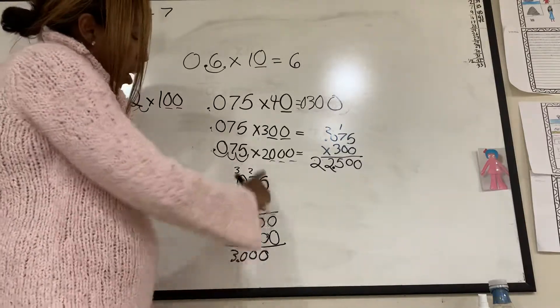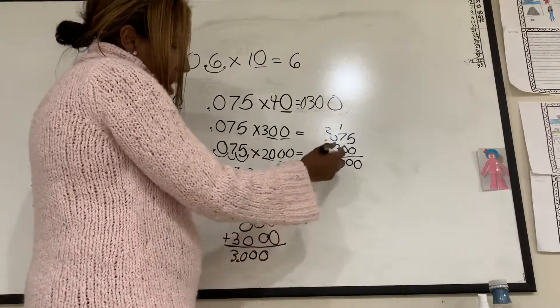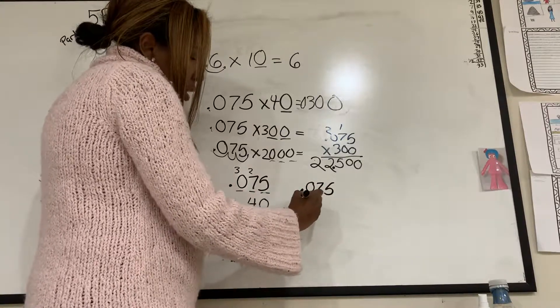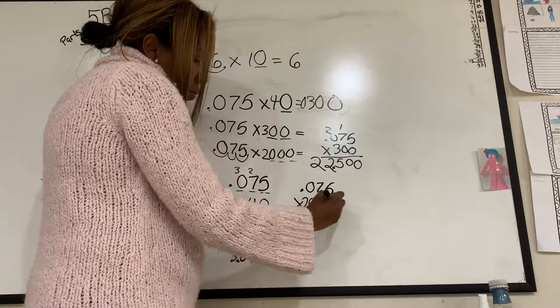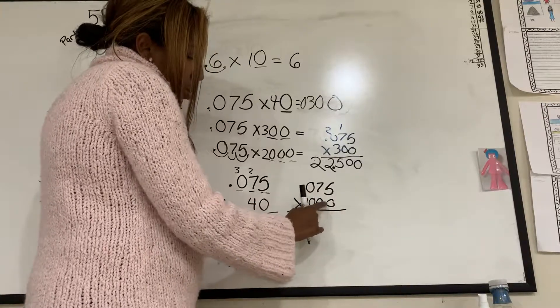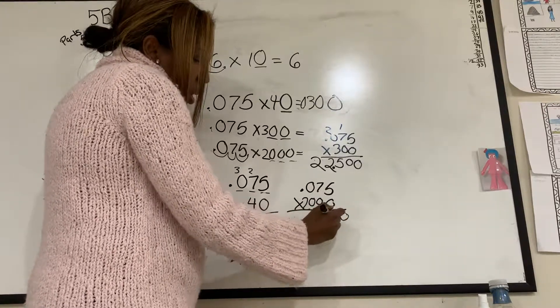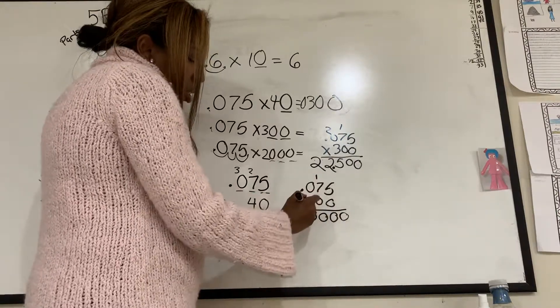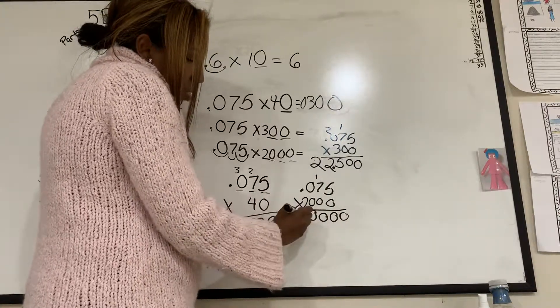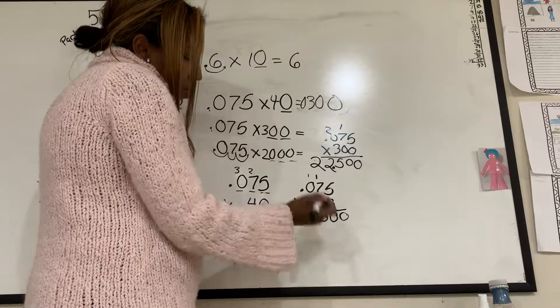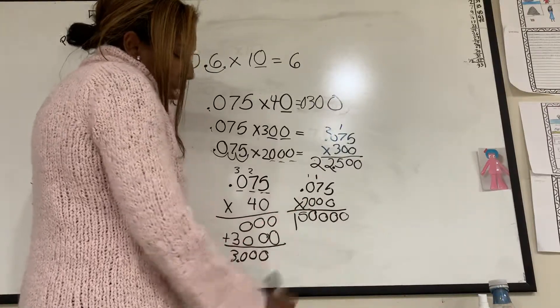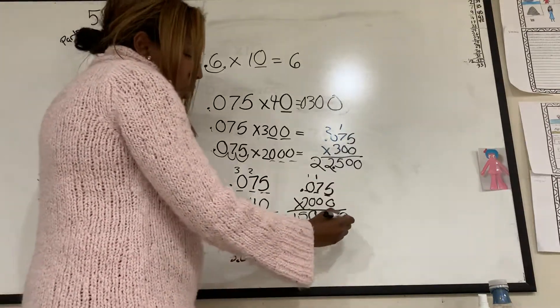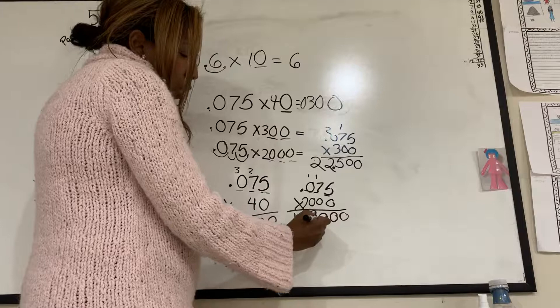This one I have 3 zeros. Remember, I'm not lining up the decimals with anything else. So I have 0.075 times 2,000. I'm just going to count 1, 2, 3 zeros. I'm going to put down 1, 2, 3 zeros. 2 times 5 is 10. Carry the 1. 2 times 7 is 14. Plus 1 is 15. Carry the 1. 2 times 0 is 0. Plus 1 is 1. Now I'm not done because I have 1, 2, 3 spots. So I'm going to move it 1, 2, 3.